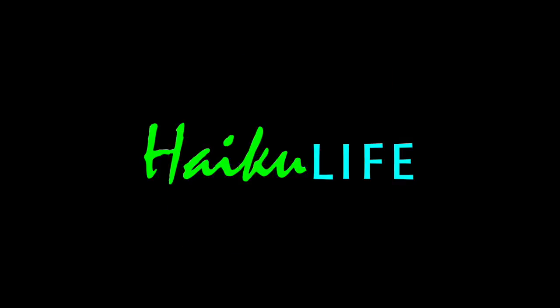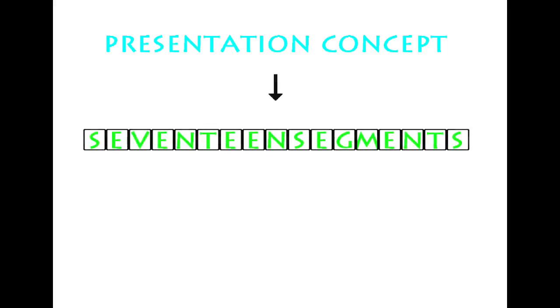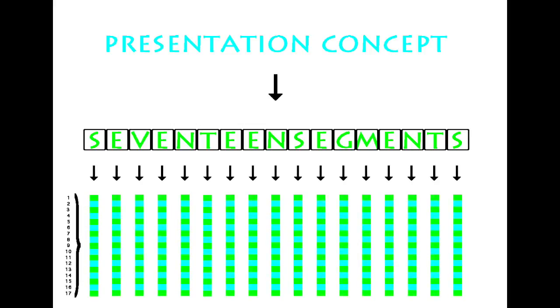Haiku Life makes its presentation in a series of 17-second segments. Each of these segments contains one image, or one block of related images. How long is 17 seconds? It's long enough to read two Haiku, or one Haiku twice, with appropriate space for natural breathing.